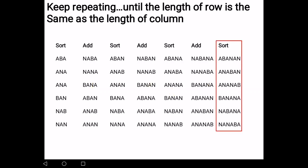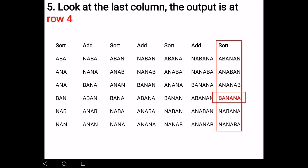Until the length of the row is the same as the length of the column. Basically, banana has six letters. You keep doing this adding and sorting until the length and the column have the same number as the length of the word. So, six, six in this example. And there you have it. Remember, just now I asked you to remember row number four. The original word is hiding at row number four.